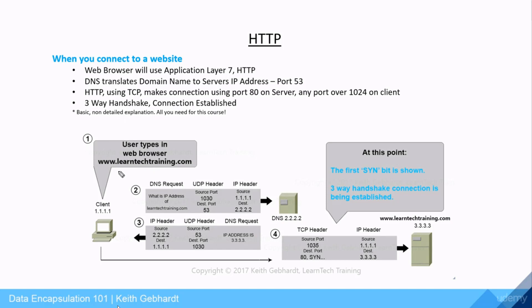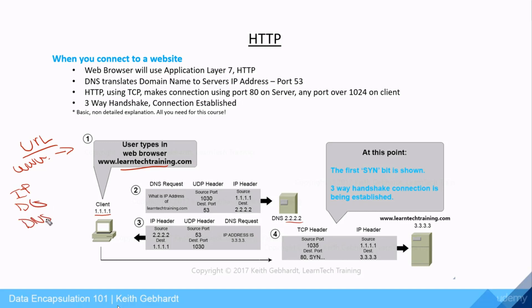To get to learntechtraining.com we type it into the URL on our web browser. Our computer's IP address is 1.1.1.1 with a /24 subnet mask, and our DNS server's IP address is 2.2.2.2. Our computer gets an IP address, a default gateway, and a DNS server address. As soon as the computer realizes it needs to go to DNS, it opens up a source port — in this case port 1030.